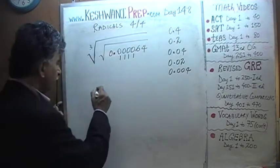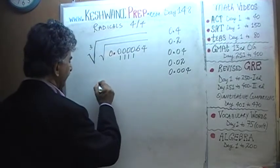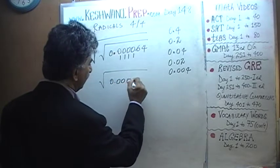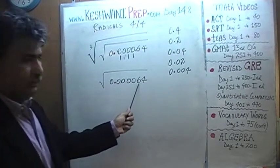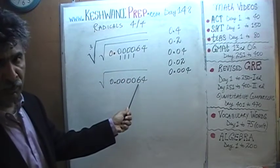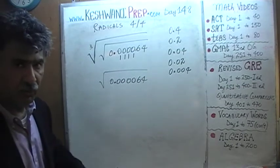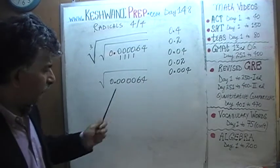Alright. So first, we have to worry about taking the square root of 0.000064. We know the square root of 64 is 8. Somehow if we can convert this into a 64, we are home free. How do we convert this into a 64?